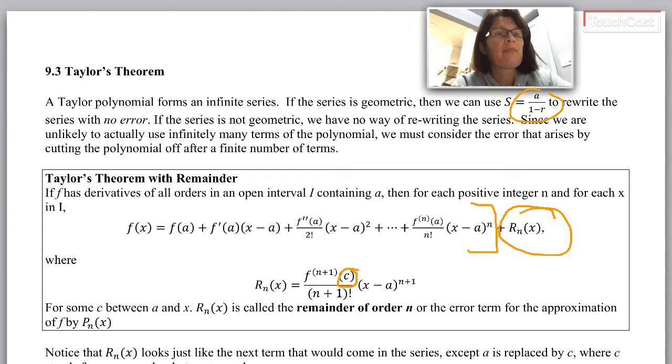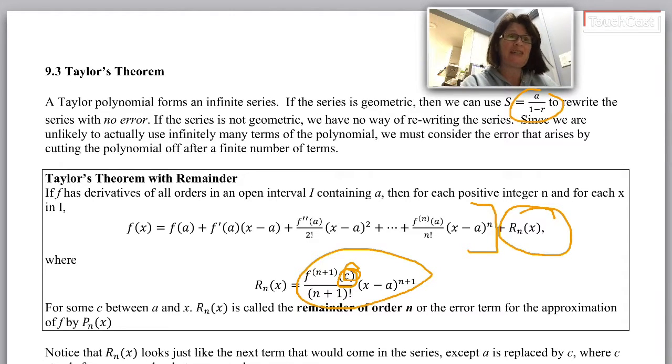Call it c - some input. If I put that into the 11th derivative and use that to write the next term in the series, that's the error. Kind of like the mean value theorem, it doesn't help you find c, but most of the time we can put an upper limit on that next derivative, which will help us put an upper limit on our error.